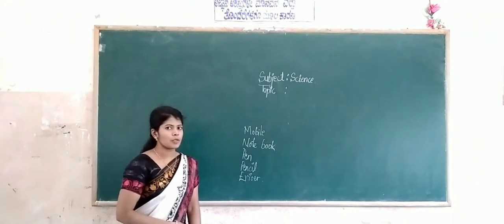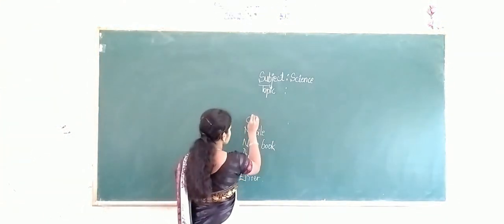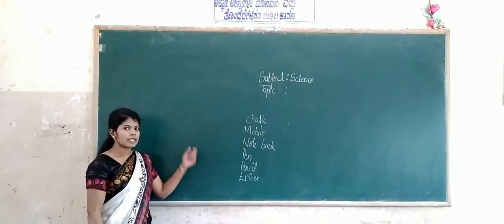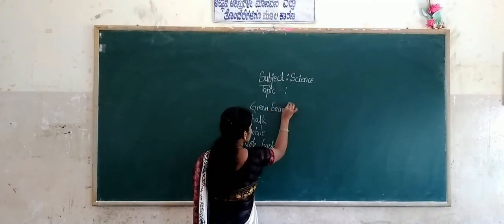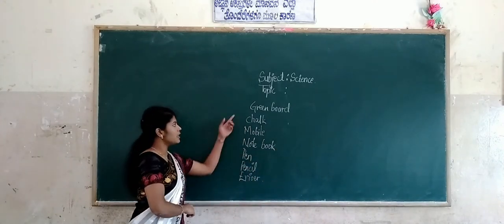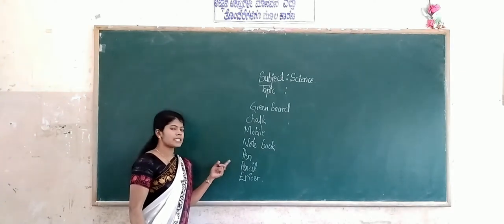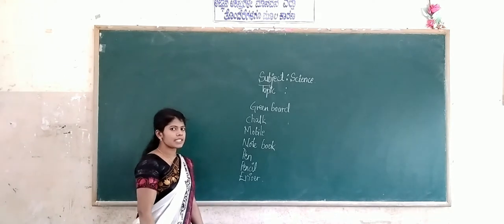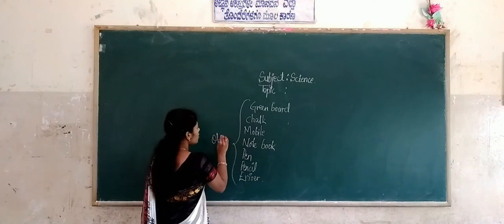Okay, let's see today. I have a chalk. What's this? Chalk. Now I am using chalk and green board. Since students — green board, chalk, mobile, notebook, pen, pencil, eraser. These are called objects. Can you see? These are all objects.